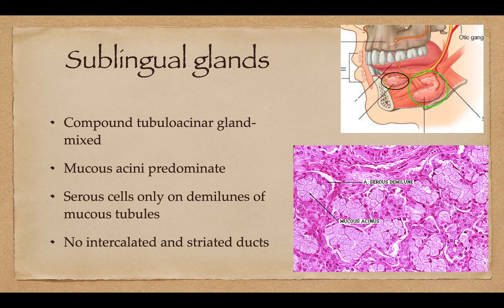The sublingual glands are the ones beneath your tongue. These are also a compound gland, but this one has more mucous acini, while the submandibular gland has more serous acini. The serous cells are only on the demilunes — once again, as these little caps. And this one has absolutely no intercalated or striated ducts.